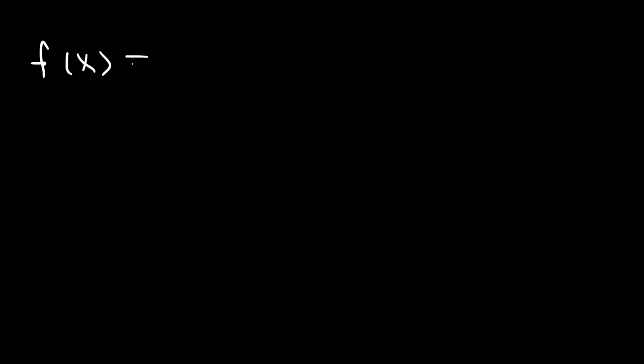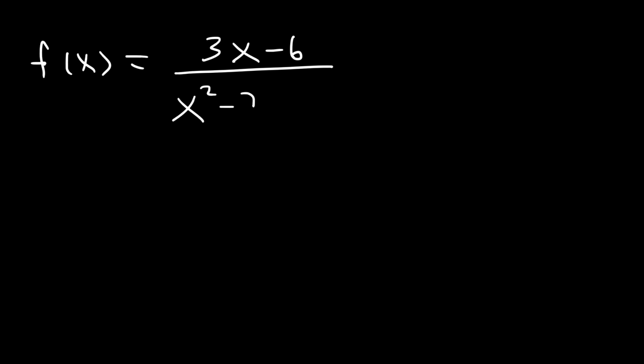Try this one. Let's say we have 3x minus 6 divided by x squared minus 7x plus 10. Go ahead and find the vertical asymptote. Now in this problem, you want to factor everything, including the numerator.